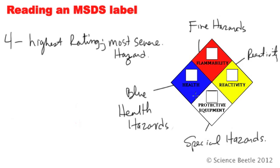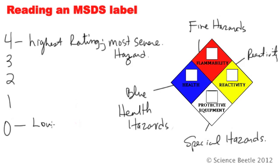When I say most severe, I'm talking about the most severe hazard for that particular color — whether it deals with a health hazard, a flammable fire hazard, a reactivity hazard, or a special hazard such as a corrosive agent, an oxidizer, acid, alkali, something that should not be mixed with water, or whether it's radioactive. The lowest rating you can get is zero. As you move up the scale from zero, the hazard severity increases.